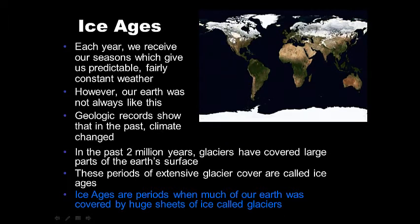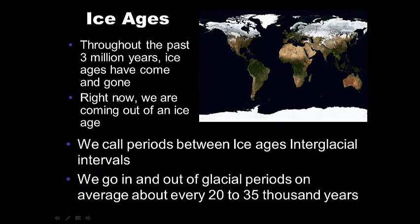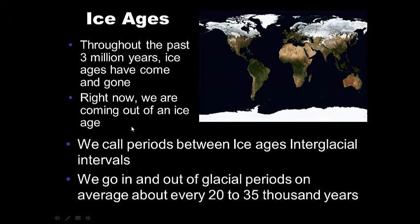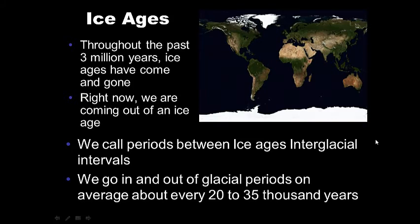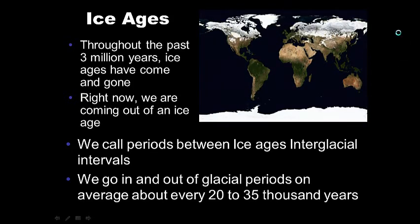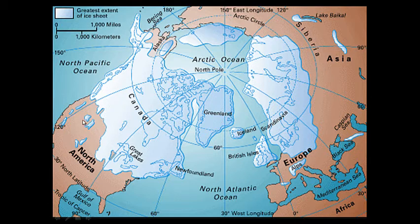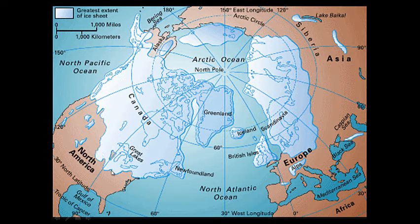The glaciers over two million years have come and gone — they've advanced and receded. Throughout the past three million years, ice ages have come and gone. Right now, we're coming out of an ice age, so the Earth is warming. We call periods between ice ages interglacial intervals, and we go in and out of an ice age about every 20,000 to 35,000 years. During the last ice age, parts of Lake Tahoe were under massive sheets of ice, much of North America was covered, and that's actually how the Great Lakes were created — by huge sheets of ice scooping out parts of land.